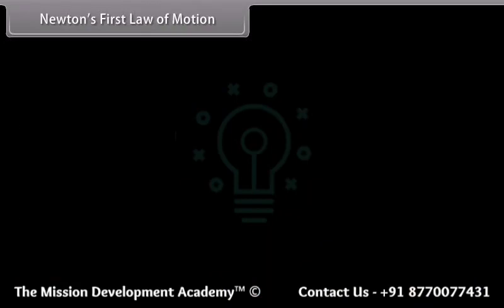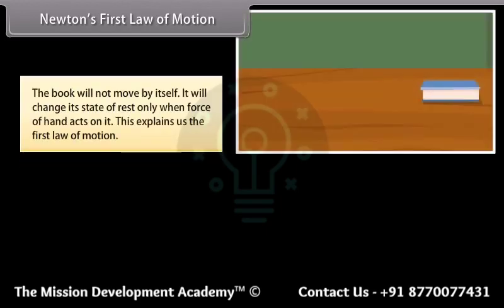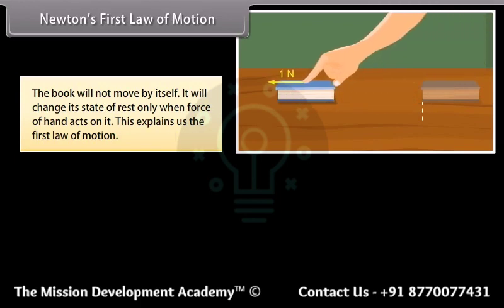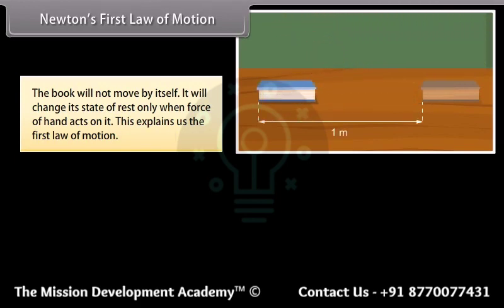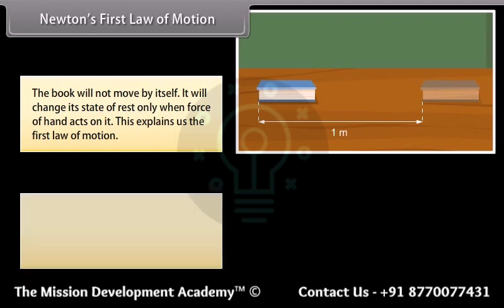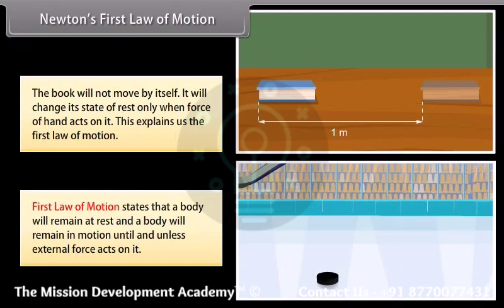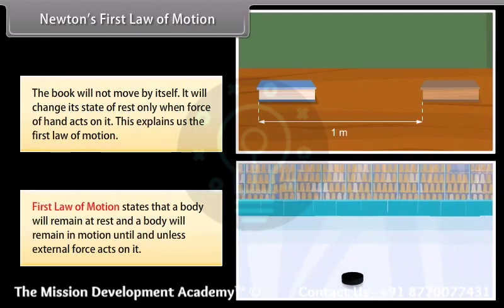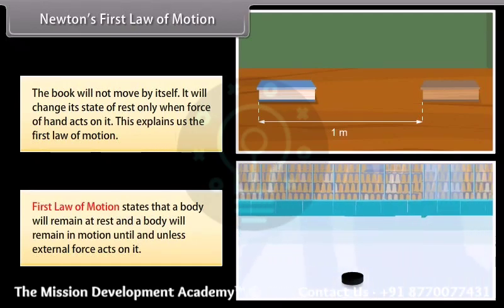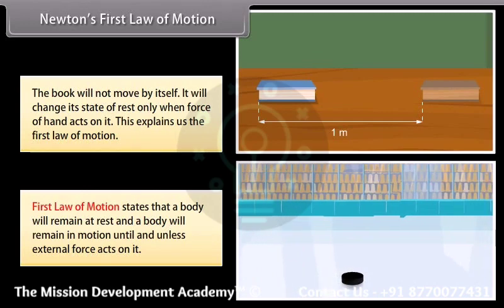Newton's first law of motion. The book will not move by itself; it will change its state of rest only when the force of a hand acts on it. This explains the first law of motion: a body will remain at rest and a body will remain in motion until and unless an external force acts on it.